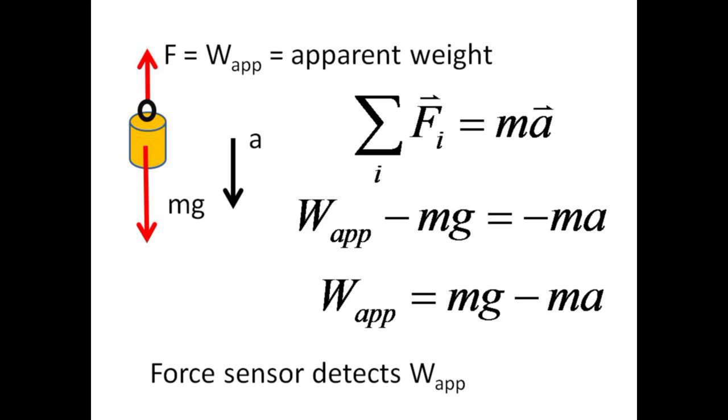According to Newton's second law, the vector sum of these two forces should equal the mass times the vector acceleration. Assuming up means positive quantities, the apparent weight minus the actual weight equals the mass times the negative value of acceleration. Thus, apparent weight equals mg minus ma.